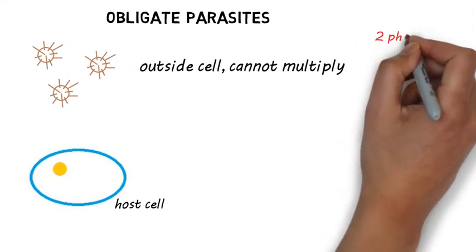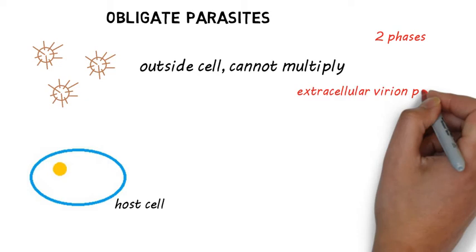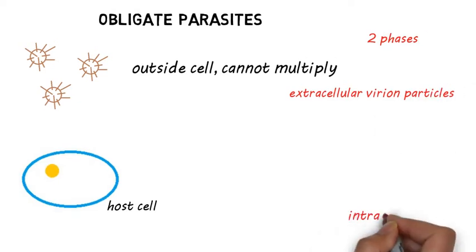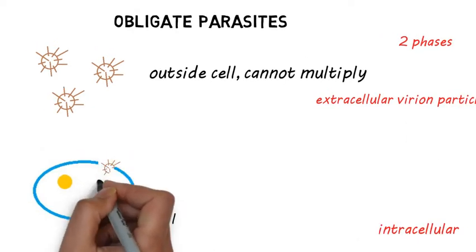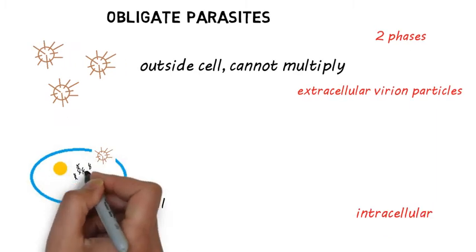Basically, viruses exist in two phases: the extracellular and the intracellular phase. As extracellular virion particles, they cannot replicate. But when intracellular, the viruses exist primarily as replicating DNA or RNA.